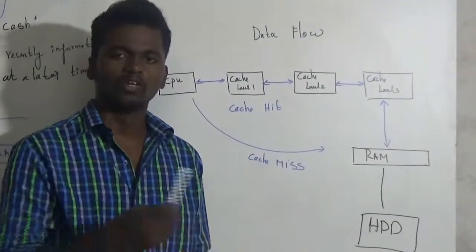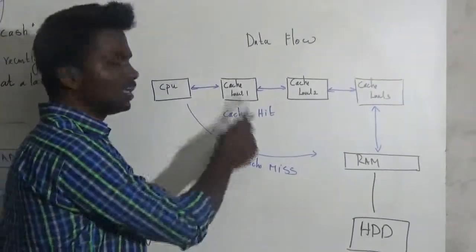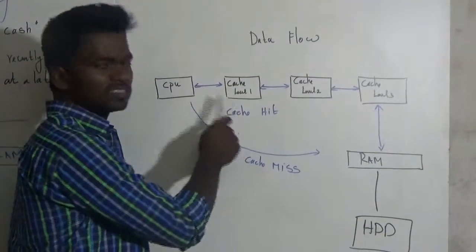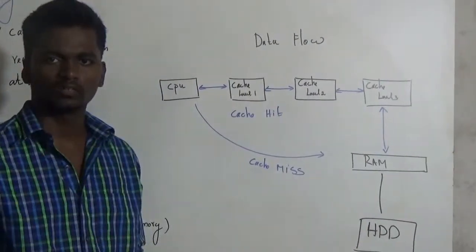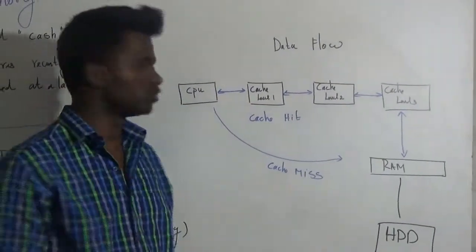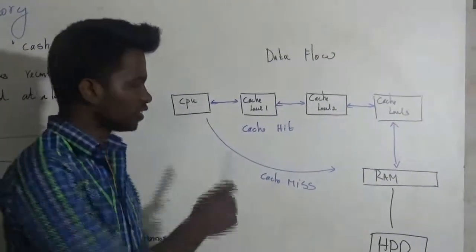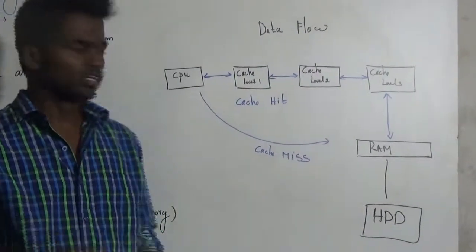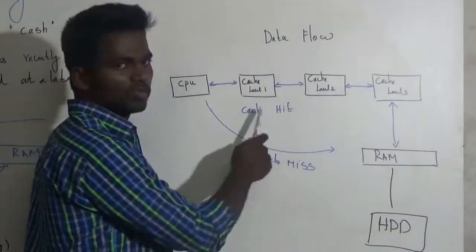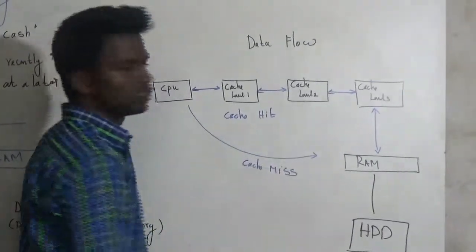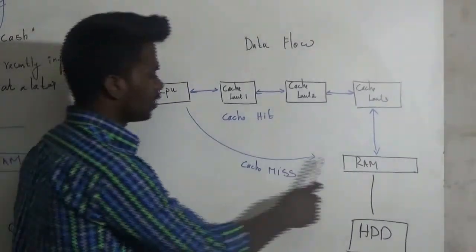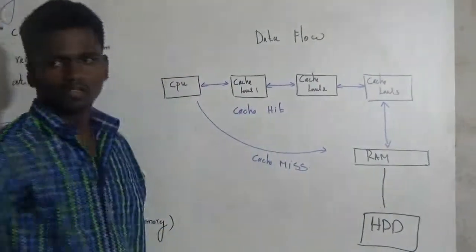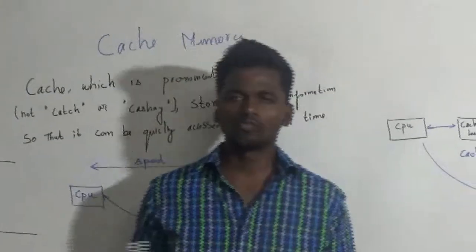We use the cache memory for the first program. Cache memory is a type of temporary memory, similar to SRAM. When we remove the data, we remove it from cache first, then re-use the cache memory. The first time we use the RAM; if we use the same program again, we use the cache memory. This is the full concept of cache memory and its data flow. Thank you.